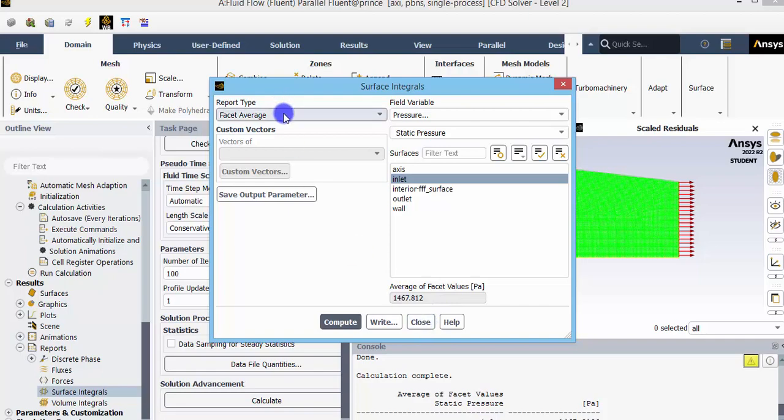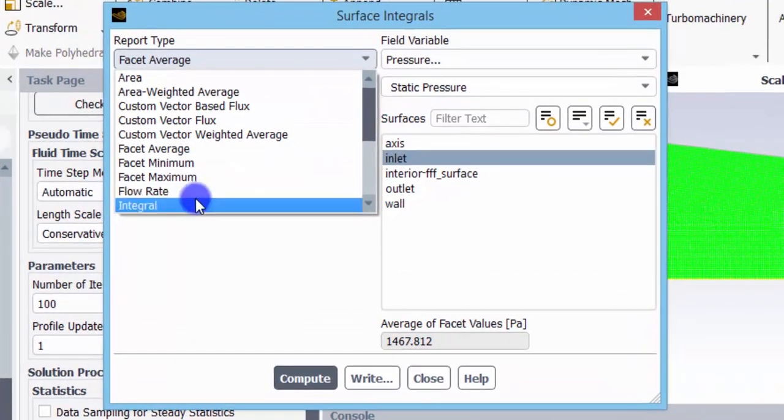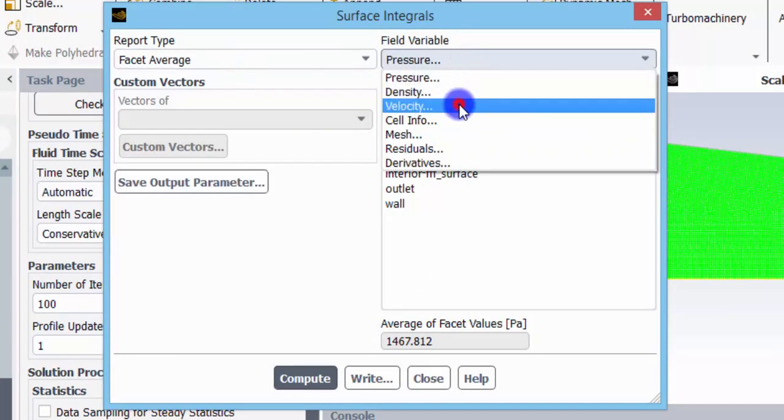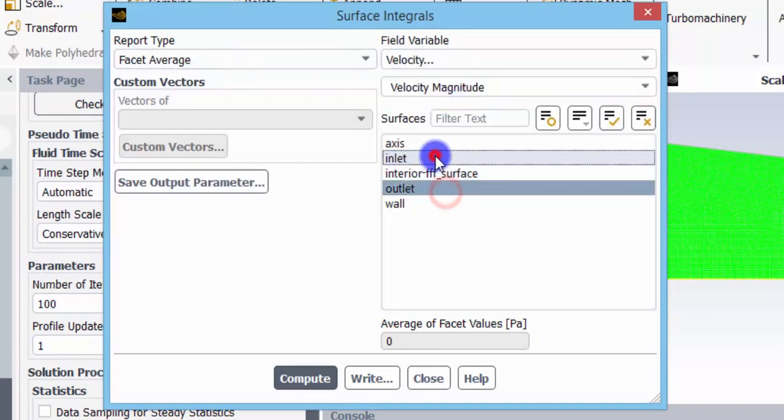And let us see the average velocity at the outlet. Let us see the facet average. Go to velocity and click the outlet and compute. We expect 2 meter per second at the outlet. The result is almost closer. We are getting 1.98 meter per second at the outlet. That is close enough to the result.